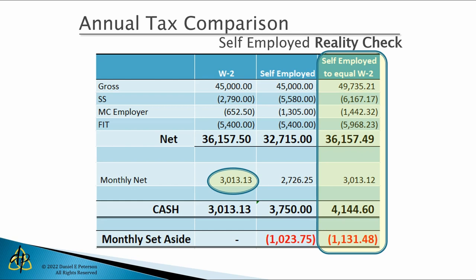The simplest advice we give our clients: take the gross money you receive from customers and take 30% of that and set it aside in a savings account. That's your tax savings account, and it should be sufficient to cover the tax burden as well as possible debt reduction or retirement options. So if you get $1,000 from customers, put $300 in a savings account and the remaining $700 can be spent on business expenses or distributions to you as the owner to pay personal expenses like grocery bills.